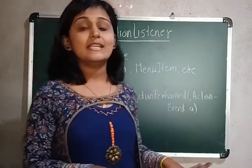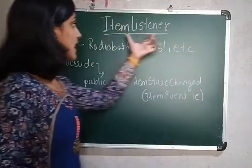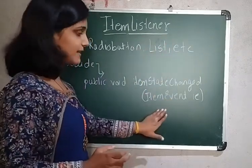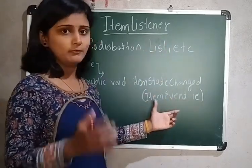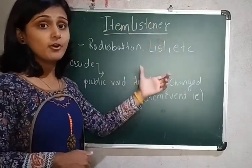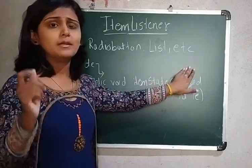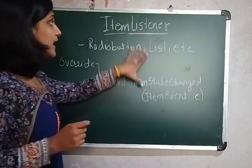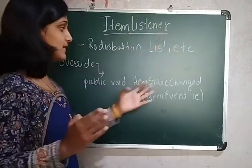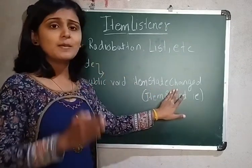Next we will see the Item Listener. The next listener is the Item Listener. In the event class we have seen the ItemEvent, so that we are going to pass here as a reference. We are going to implement the Item Listener when we are going to perform actions on a radio button, list, check box, or a checkable menu item. We are going to override the method: itemStateChanged.